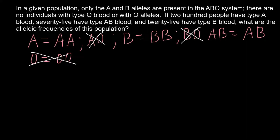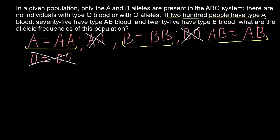So we are left with only three variants, and this makes all the calculations even easier. We have 200 people that have type A blood. Since there is no O allele, each of those 200 people would have genotype AA, meaning each person has two alleles A. So we multiply 200 by 2, giving us a total of 400 alleles A.